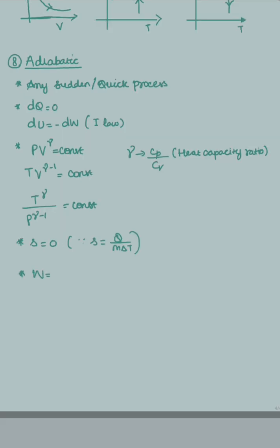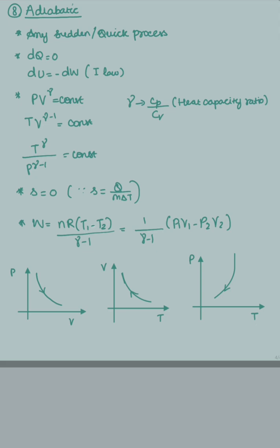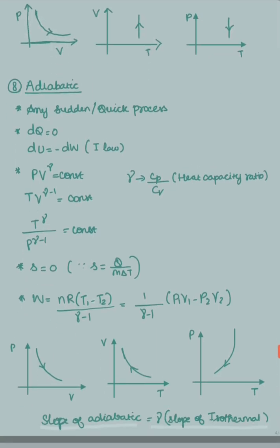Work done in the adiabatic process is NR(T1 - T2) / (γ - 1), which can also be written as (1/(γ - 1)) × (P1V1 - P2V2), since PV equals NRT. These are the graphs for the adiabatic process. The slope of the adiabatic curve is gamma times the slope of the isothermal curve, as can be seen by comparing the two sets of graphs.